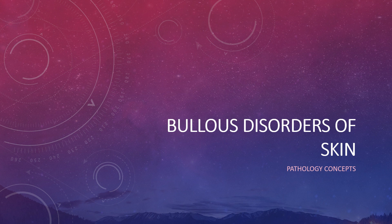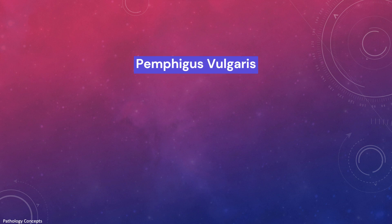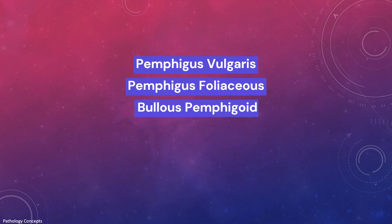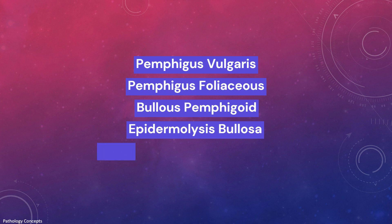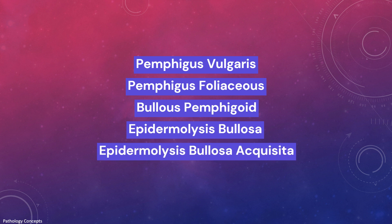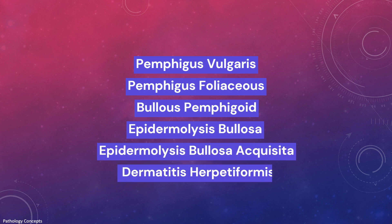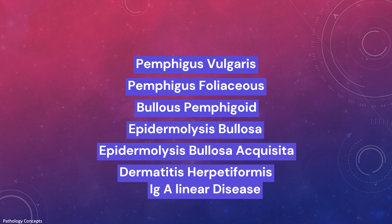Hello and welcome everyone. Today we are discussing bullous disorders of skin. The most common disorders are pemphigus vulgaris, pemphigus foliaceus, bullous pemphigoid, epidermolysis bullosa, epidermolysis bullosa acquisita, dermatitis herpetiformis, and IgA linear disease. These are all autoimmune diseases.